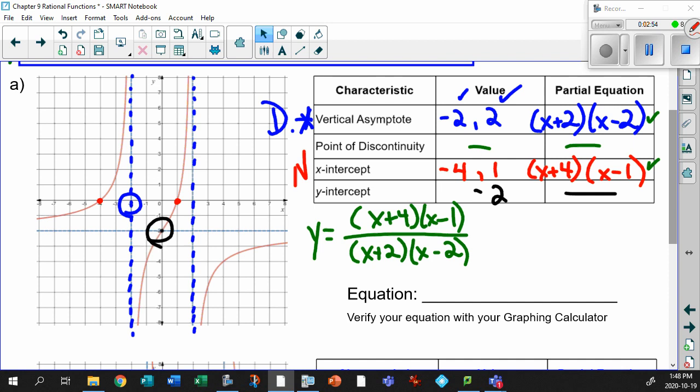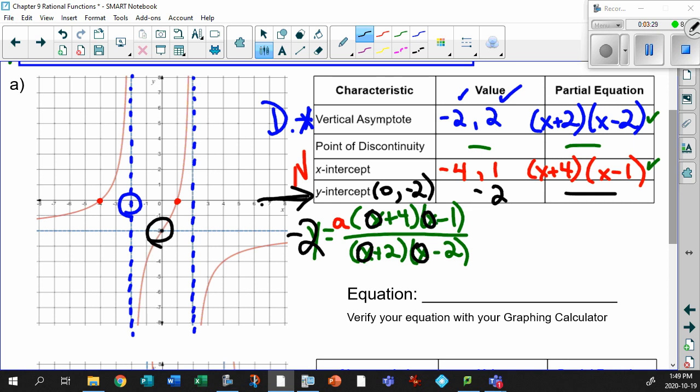Okay. Now, remember at the beginning, I said you have to include the stretch factor, some sort of a value. So let's just put an a right up front. Now, that's our partial equation. But let's think about this for a second. This is where the y-intercept comes into play. Right here. That's super huge important. Think about what a y-intercept is. All the values of x are 0, the y equals to minus 2. So look what happens to this equation. This equation is really cool. This y now becomes minus 2. This x becomes 0. That x becomes 0. That x becomes 0. That x becomes 0.